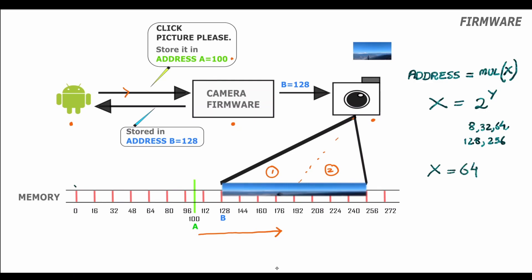Therefore, valid addresses acceptable or preferred by the camera hardware are 0, 64, 128, 192, 256, and so on. Firmware will not send the received address 100 to the hardware because 100 is not a multiple of 64. Firmware needs to change address A to a nearby address B which is a multiple of 64. For A equal to 100, the address 128 would be a valid choice. Therefore firmware changes the address from 100 to 128 and sends the request to hardware to click the picture and store the image.